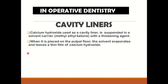Calcium hydroxide when used as a cavity liner is suspended in a solvent carrier like methyl ethyl ketone with a thickening agent. While it is placed on the pulpal floor, the solvent evaporates and it leaves a film of calcium hydroxide. These calcium hydroxide liners are reported to display antibacterial properties, as the antimicrobial action comes from dissociation into calcium and hydroxyl ions, which are highly reactive oxidant free radicals.